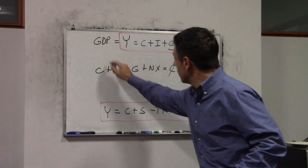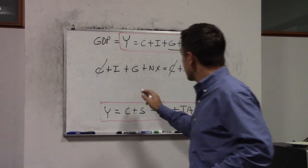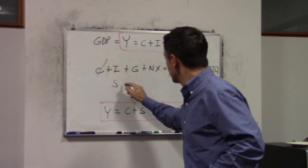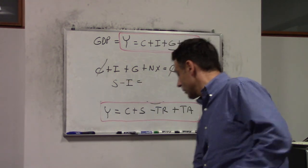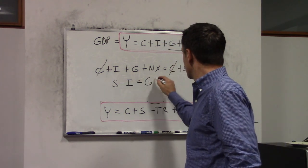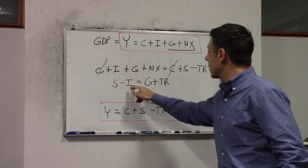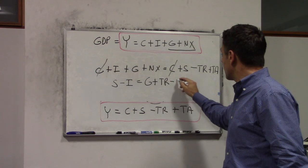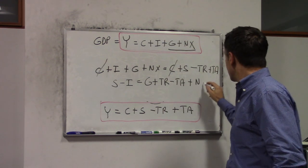I can cancel consumption. And if I rearrange these terms, I will obtain the following: S minus I is equal to government spending plus transfers minus taxes plus net exports.